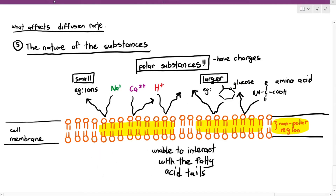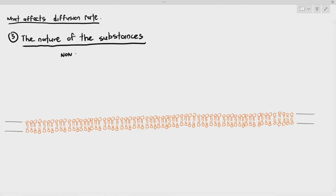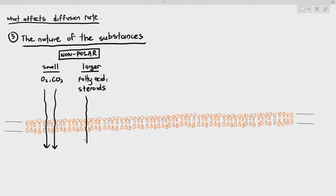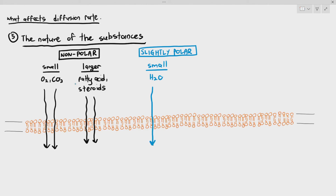In summary, drawing out the phospholipid bilayer: small non-polar molecules such as oxygen and carbon dioxide have no difficulty passing through the bilayer. Larger non-polar substances such as fatty acids and steroids — for example, steroid hormones such as testosterone — also do not have difficulty passing through the bilayer because they are non-polar. Slightly polar substances such as water will be able to pass through the bilayer, but at a lesser rate compared to non-polar particles.